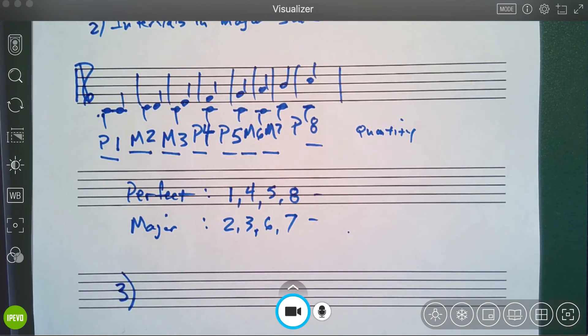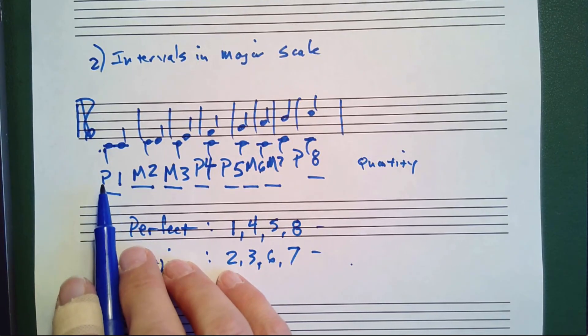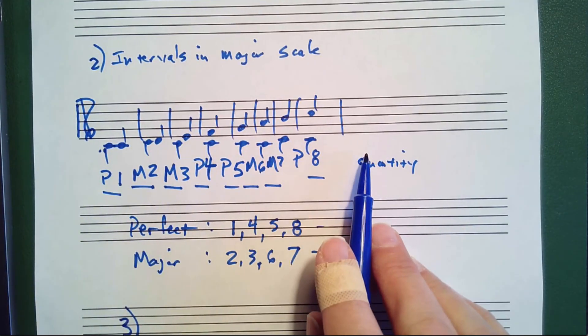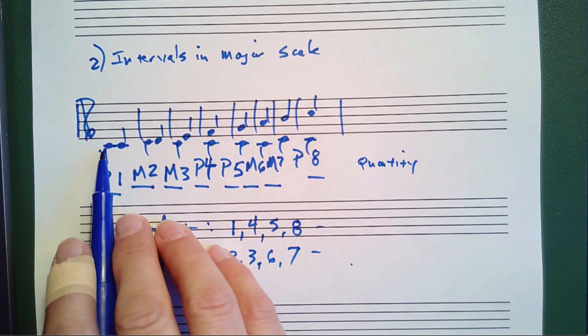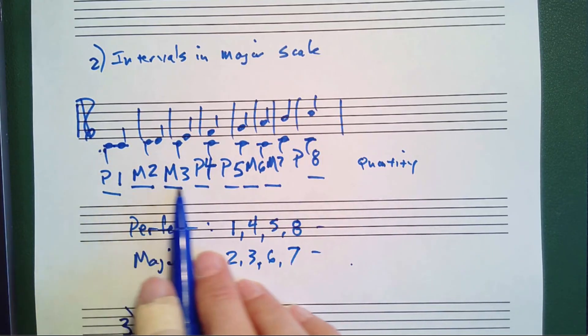Picking up where we left off in the last video, we saw that in the major scale from the first note of the scale to every other note of the scale was either a perfect or major interval.